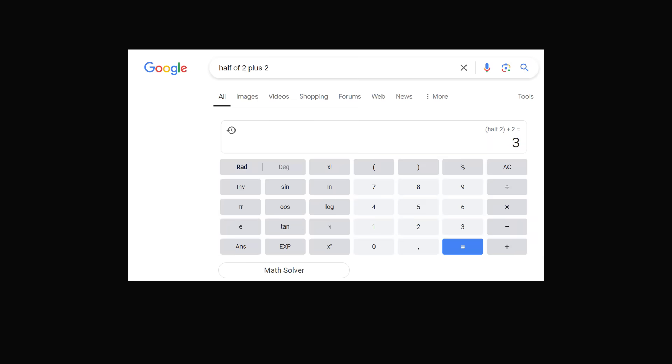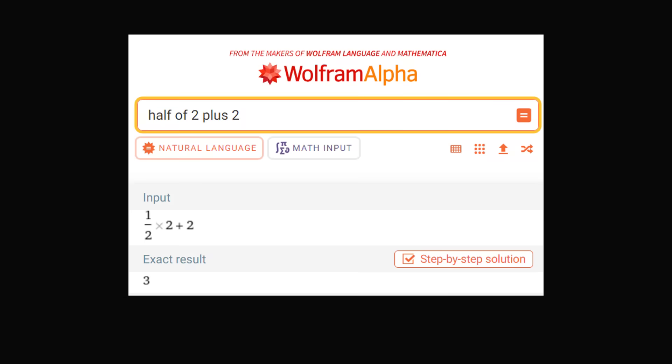My perspective was backed up by online calculators. If you type in half of 2 plus 2 into Google, it will interpret taking half of 2 first, which will be 1, and then adding 2 to get to the result of 3. Wolfram Alpha translates the sentence in exactly the same way, giving the answer of 3.